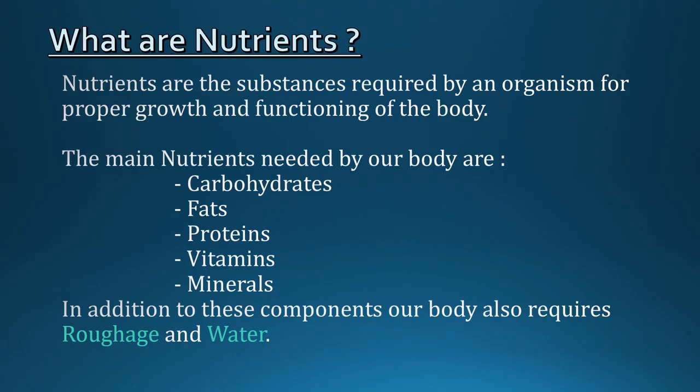One more term related to food is nutrient. Nutrients are the substances required by an organism for proper growth and functioning of the body. The main nutrients needed by the human body are carbohydrates, fats, proteins, vitamins, and minerals. In addition to these components, our body also requires roughage and water.